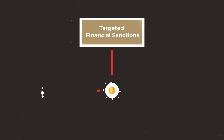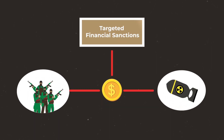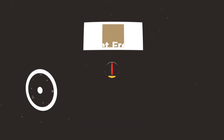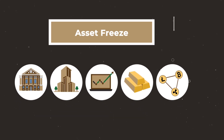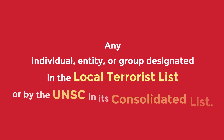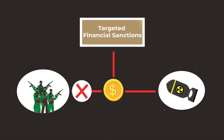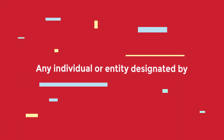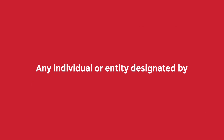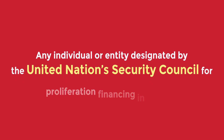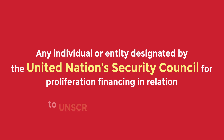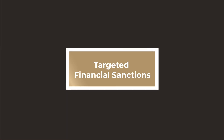Targeted financial sanctions against terrorism and the proliferation of weapons of mass destruction aim to freeze and prevent funds or other assets from being made available to any individual, entity, or group designated in the Local Terrorist List or by the UNSC in its Consolidated List, or any individual or entity designated by the United Nations Security Council for proliferation financing in relation to Iran and North Korea's weapons of mass destruction programs.